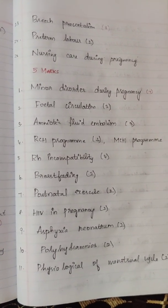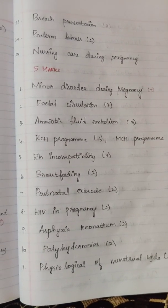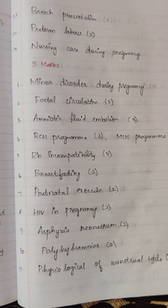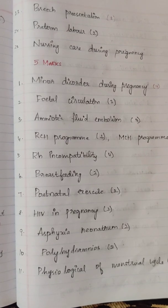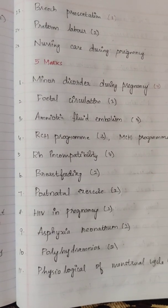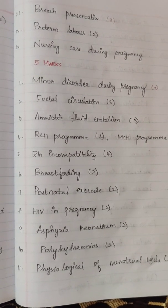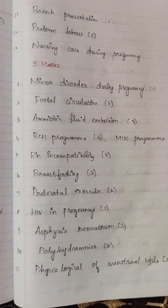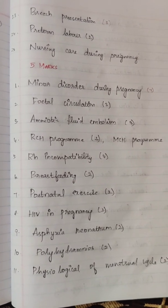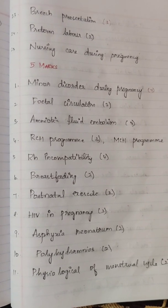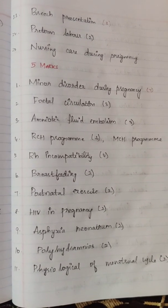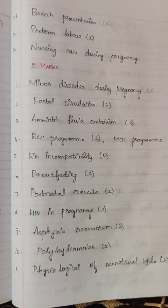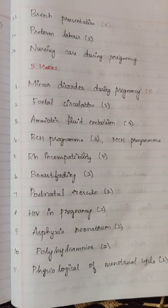Now for 5-mark questions: the most important is minor disorders during pregnancy — this question has appeared 7 times. Next: fetal circulation, 3 times. Amniotic fluid embolism, 3 times. RCH program, 3 times. MCH program is similar, so learn both together.